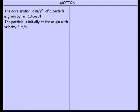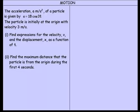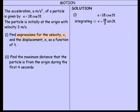We'll look at another example. The acceleration a meters per second squared of a particle is given by a equals 18 cos 3t. The particle is initially at the origin and the velocity is 3 meters per second. We're asked to find expressions for the velocity and displacement. Since we're given the acceleration and need to find the velocity, we integrate. Integrating gives v equals 18 on 3 sine of 3t plus a constant, which simplifies to 6 sine 3t plus c.